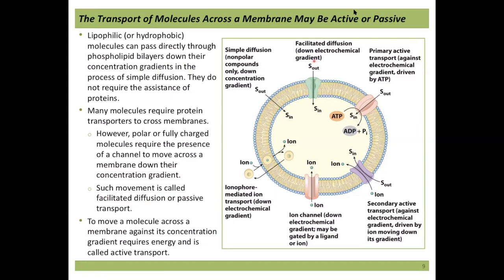Ions tend not to move through the hydrophobic interior of the membrane. However, ionophores can mediate that transport by surrounding and shielding the charge of an ion, allowing it to navigate through the hydrophobic portion — still moving down the concentration gradient from high to low. You can also have ion channels that allow ions to move through. These are all examples of mediated passive transport using proteins. Various names for these include carriers, permeases, channels, ionophores, and transporters.